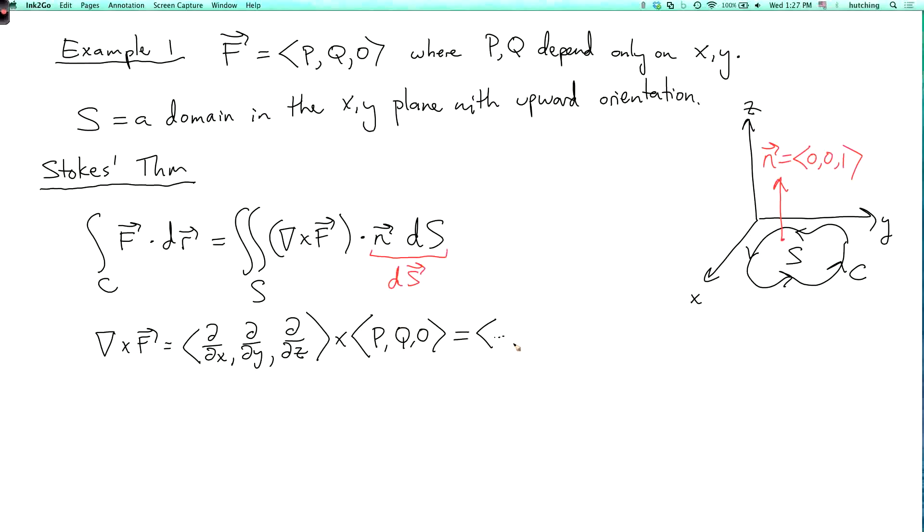So it's something comma, something comma, and then the z component is d dx of q minus d dy of p, so it's q x minus p y.